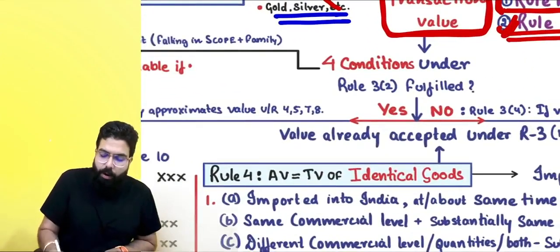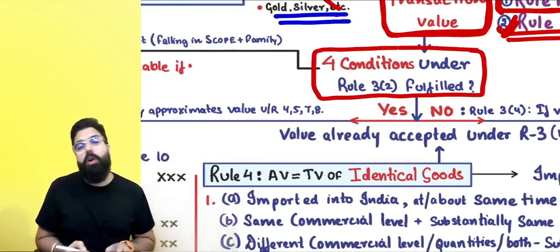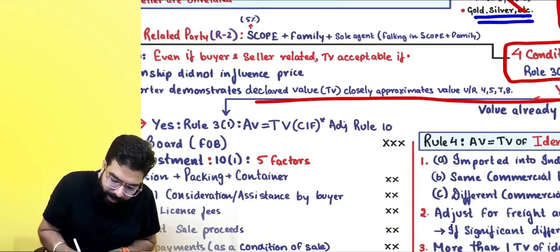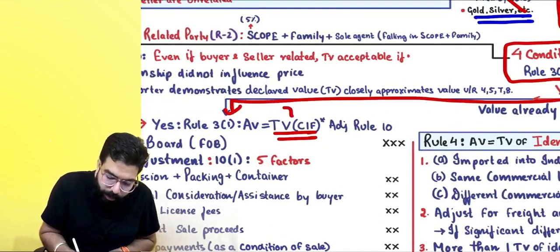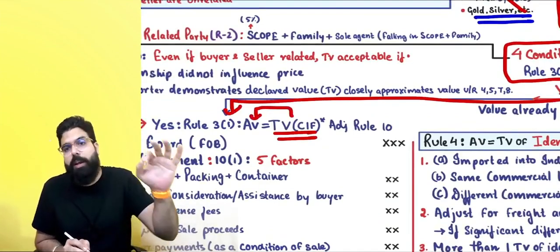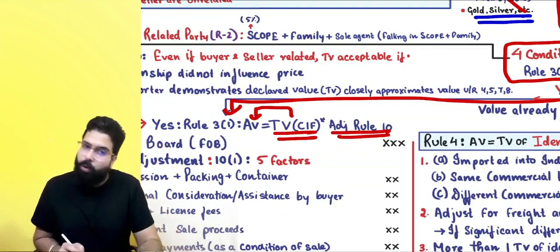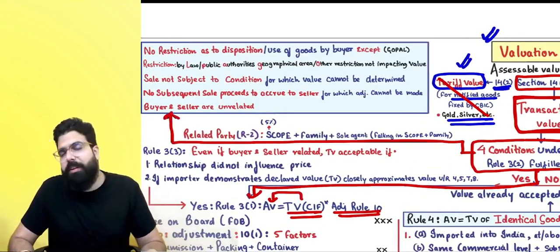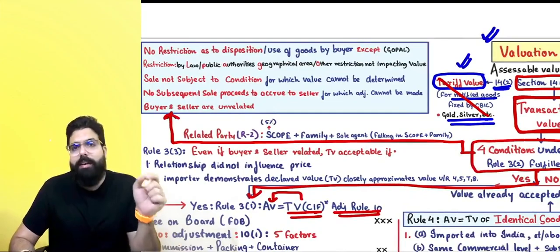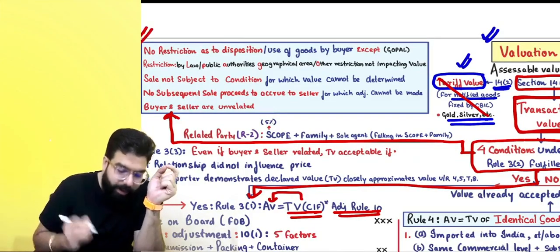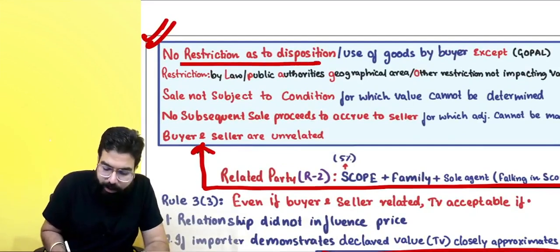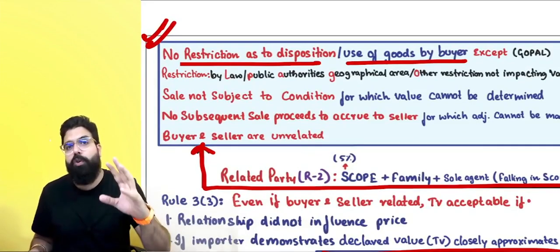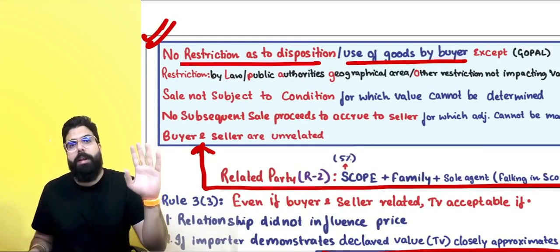If the proper officer does not have a doubt, you must fulfill the four conditions under Rule 3 Sub-rule 2. If all four conditions are satisfied, your transaction value becomes the assessable value on which duty is paid, subject to adjustment under Rule 10.